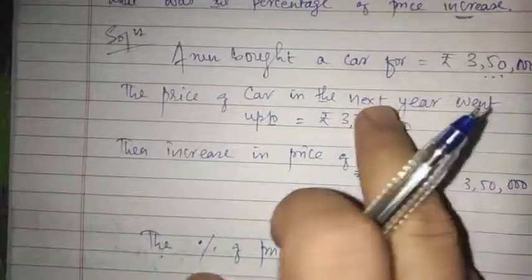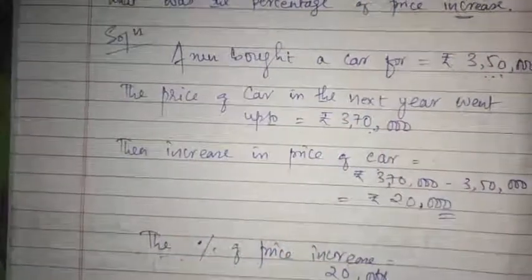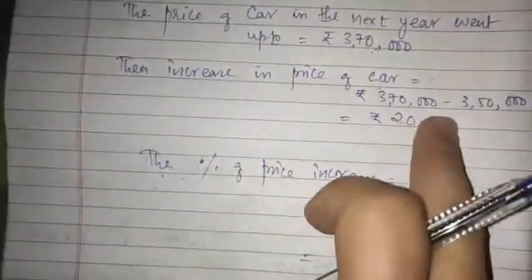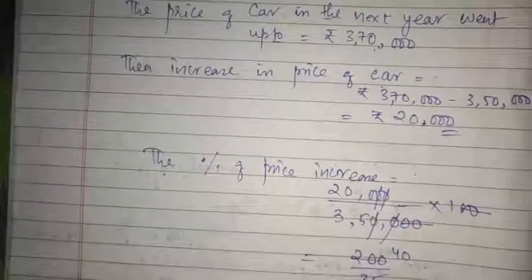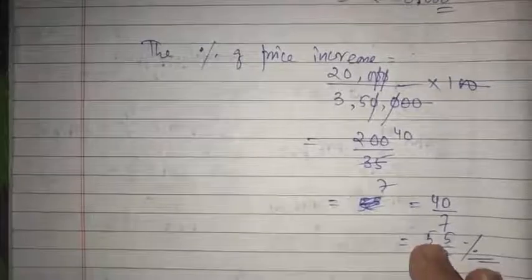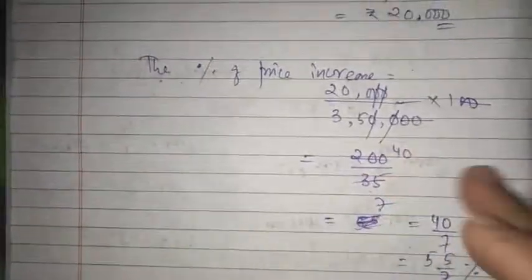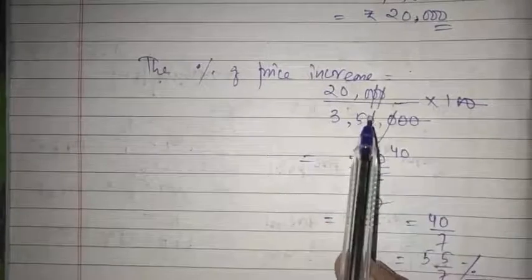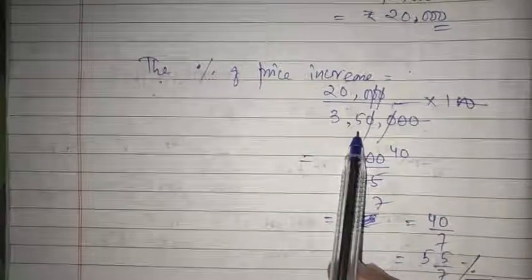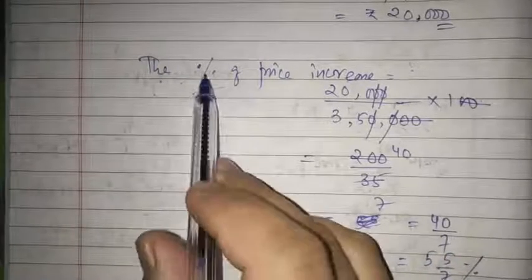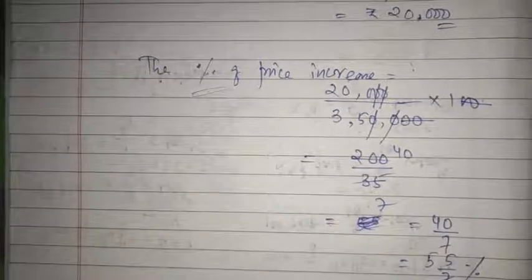To summarize: first write the initial price and the increased price, then find the increase in price, which is 20,000. Then find the percentage of price increase by dividing the increase by the initial price into 100. This method applies for both percentage increase and percentage decrease.